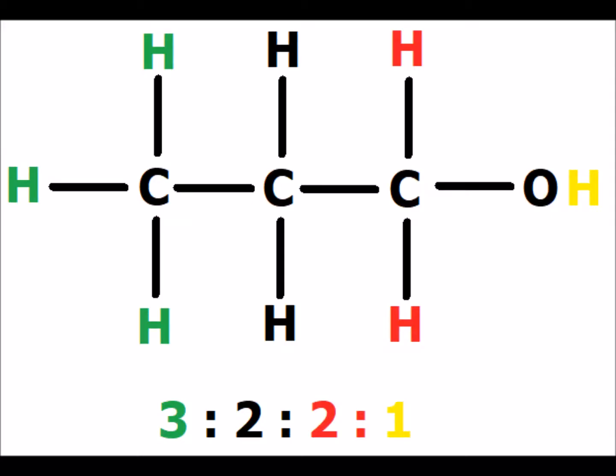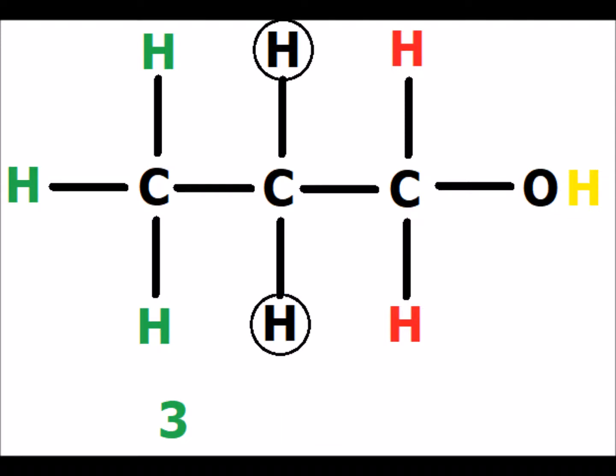1-Propanol has four distinct types of hydrogens, shown in green, black, red, and yellow, with intensity ratios of three to two to two to one. The three green methyl hydrogens have two neighbors — the two black hydrogens. Therefore, the signal for the methyl green hydrogens will be split into a triplet because there are two neighbors.